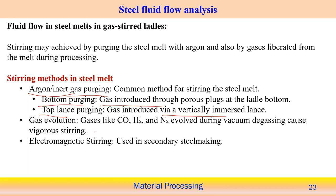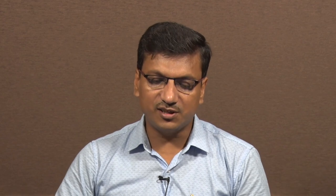During vacuum degassing, gases like carbon monoxide, H₂, and N₂ evolve and also cause stirring action. Stirring can also be achieved by applying an electromagnetic field, which alters the level of dissolved gas in the liquid metal. Electromagnetic stirring is used in secondary steelmaking operations, while primary operations rely on gas purging.